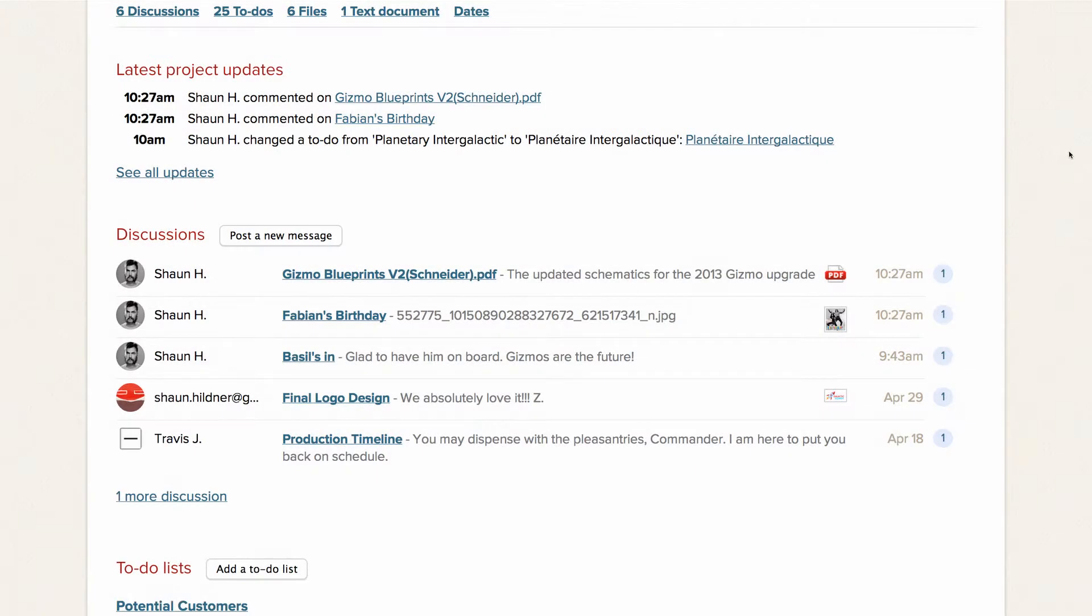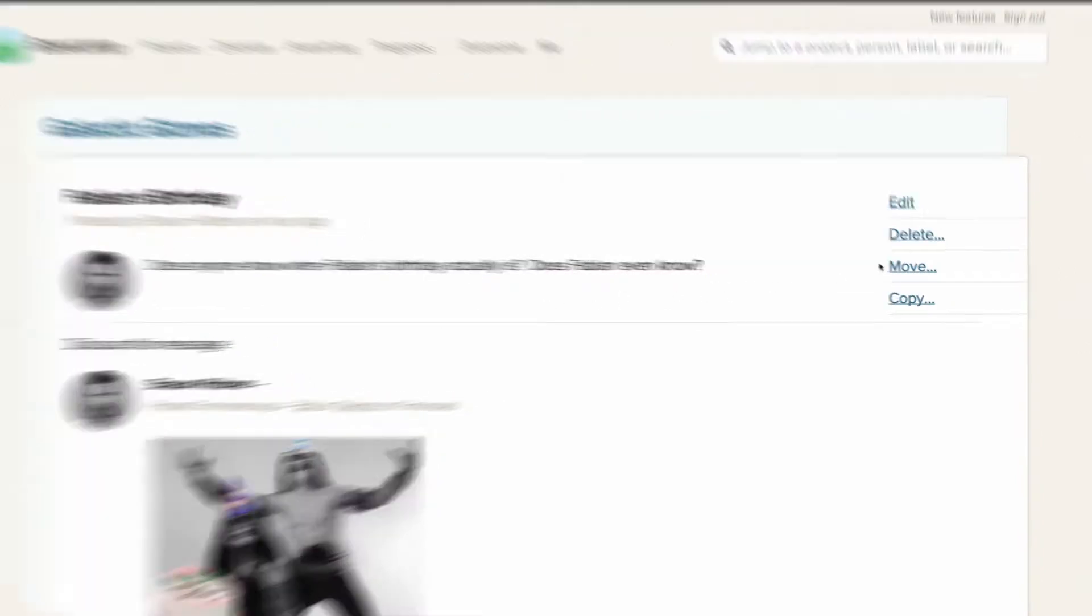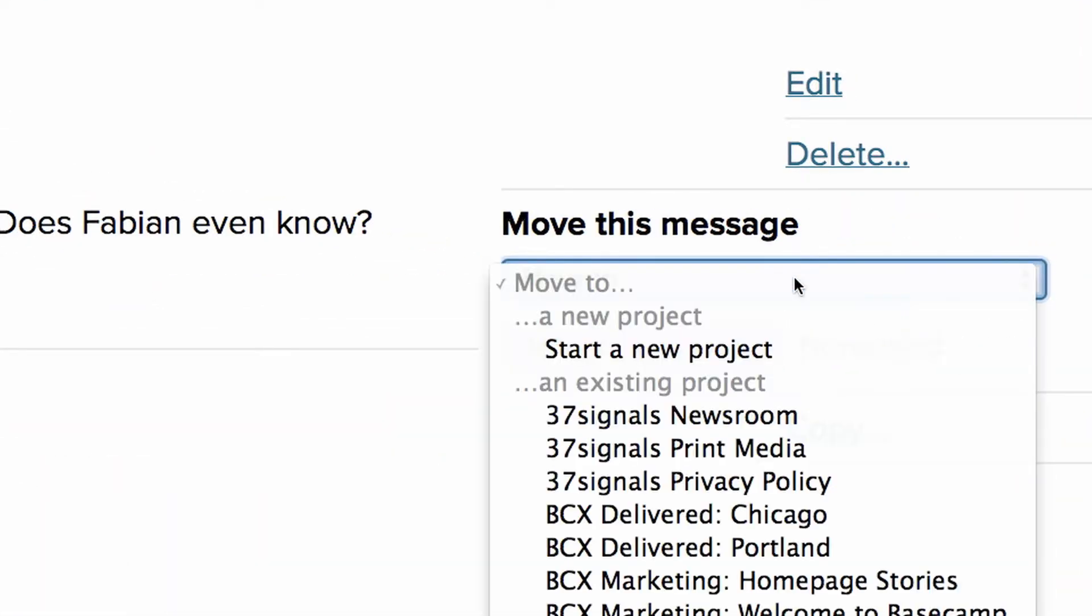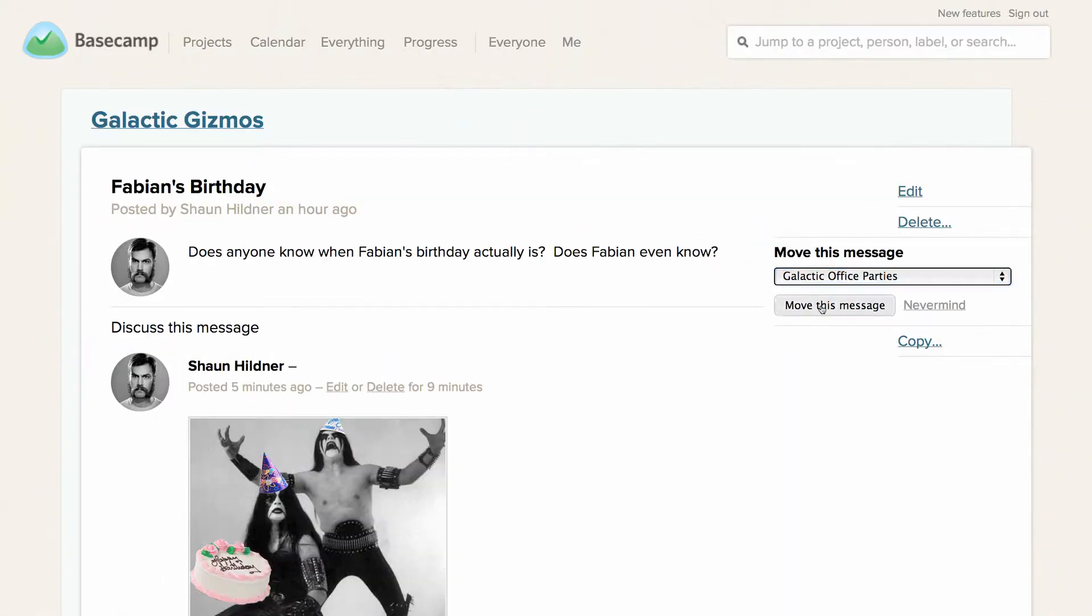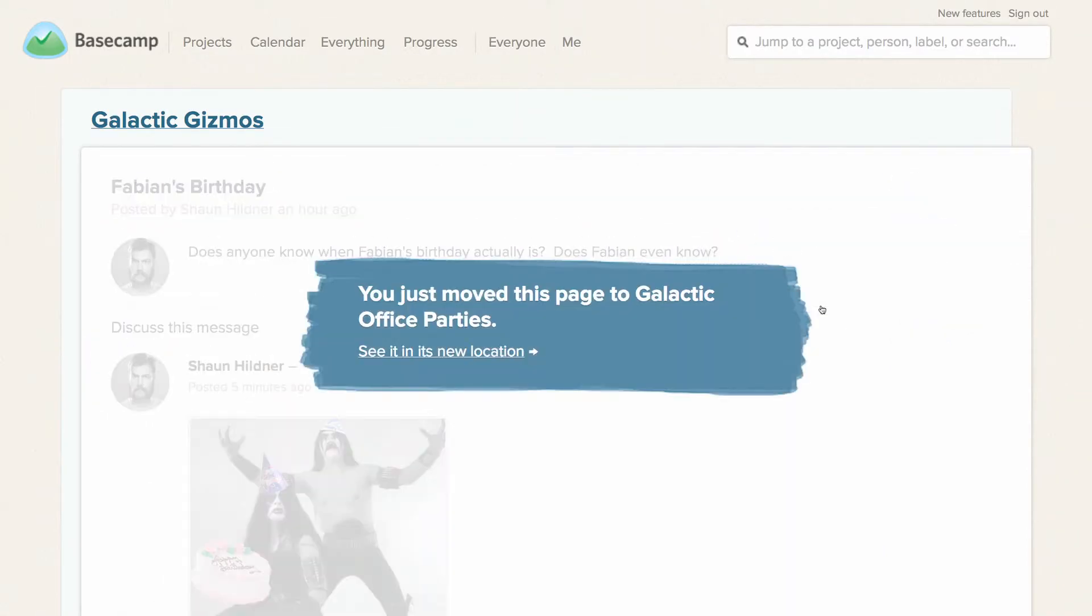Here's how it works. We need to move this discussion to a new project so it doesn't get lost. No problem. Just click Move and choose whether to send it to a new project or one that already exists. The discussion and all the comments and files attached to it are instantly moved to the other project.